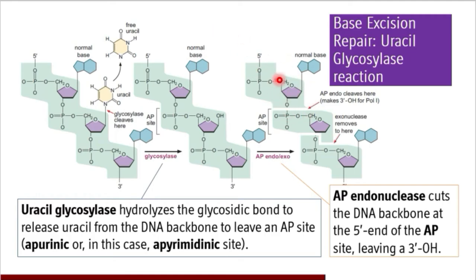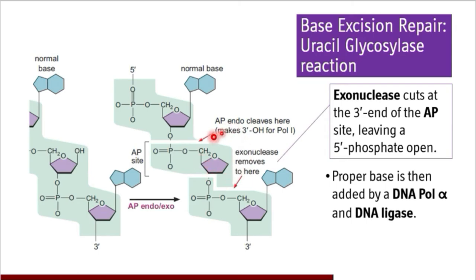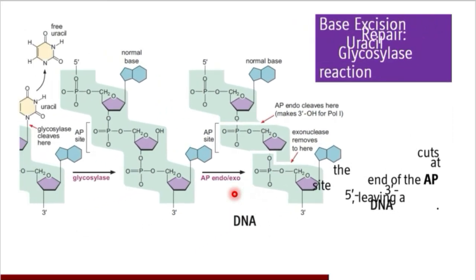Then the exonuclease cuts at the 3' end to release the AP site from the strand — it must be cut at both the 5' end and 3' end of the apurinic site. The AP endonuclease cleaves at the 5' end of the AP site, and the exonuclease cleaves at the 3' end, leaving the 5'-phosphate of the next nucleotide open. A proper base is then added by DNA polymerase alpha, and this nick is sealed by DNA ligase.